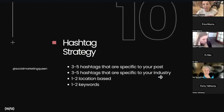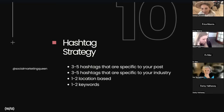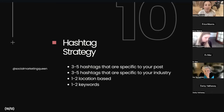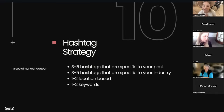For hashtag strategy, try to use all 30 if you can. Three to five hashtags should be specific to the post — if you're posting about baby dolls, use hashtag 'baby dolls.' The next three to five are specific to your industry — like 'toy store.' Location-based keywords are super important too: hashtag 'Orlando Florida,' hashtag 'Chicago.' If you're not location-based, start targeting bigger cities in the area you want to reach. The last two are keywords related to your niche — for me that's hashtag 'social media manager' and hashtag 'social media agency.'